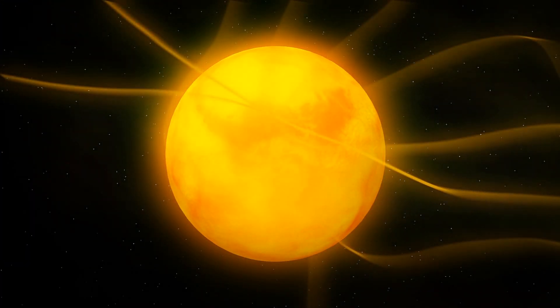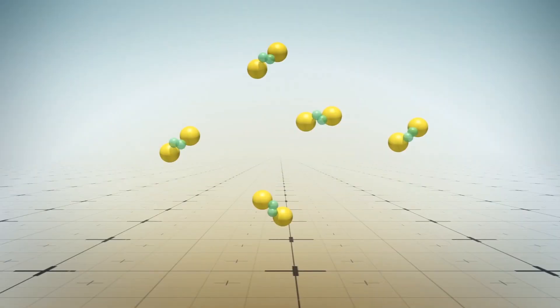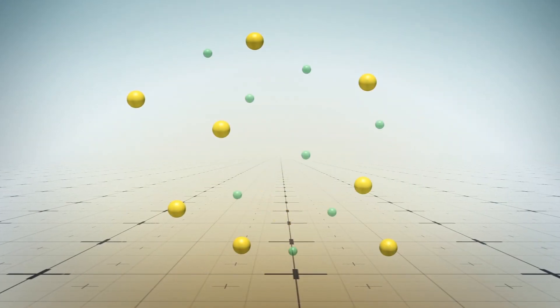The Times reports the Sun creates the heliosphere bubble by blowing solar wind, or charged particles that are mostly hydrogen.